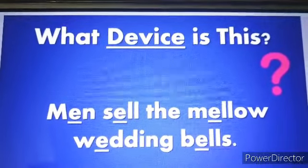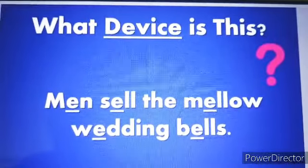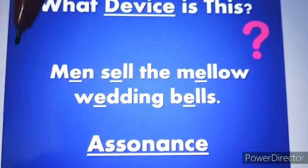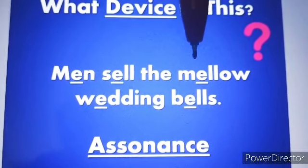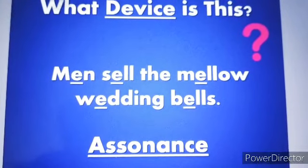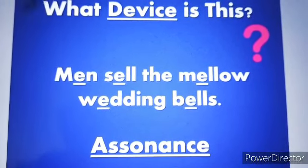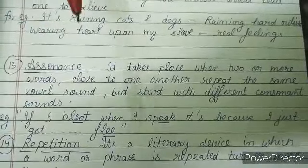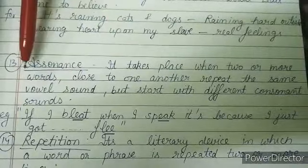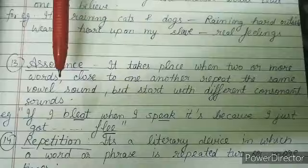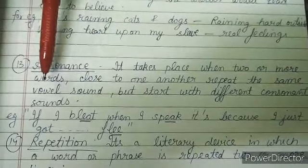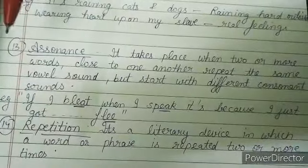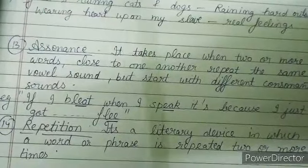Our next device is assonance. For example: 'Men sell the mellow wedding bells.' The vowel sound 'e' repeats throughout — sell, mellow, bells. Assonance is a figure of speech that takes place when two or more words close to one another repeat the same vowel sound, but they start with different consonant sounds.